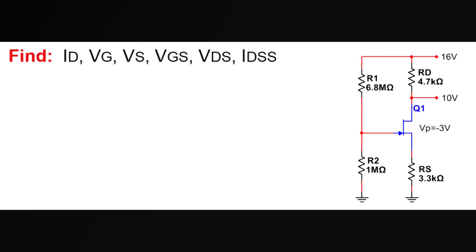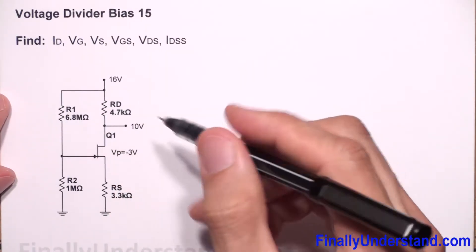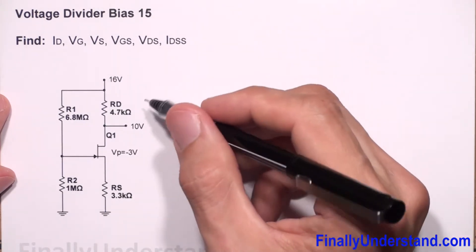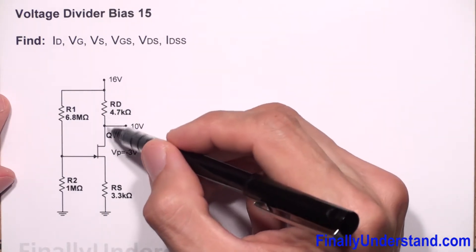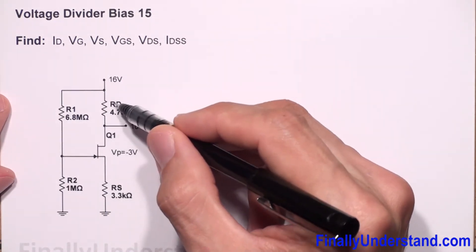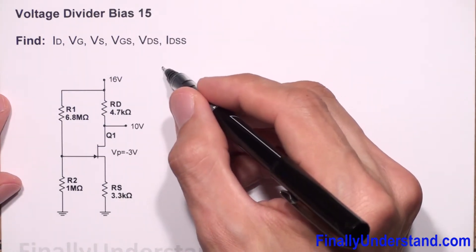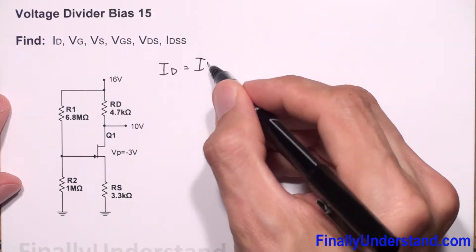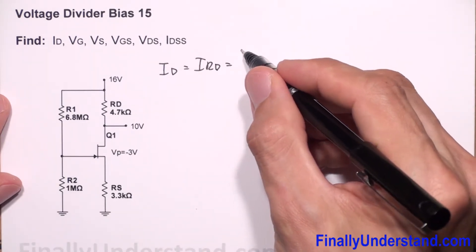Let's take a look at this example. We have been given VD and VDD. ID is the current that will go through the drain of the transistor and through the resistor RD. We can find this by simply subtracting: ID = IRD = (VDD - VD) / RD.